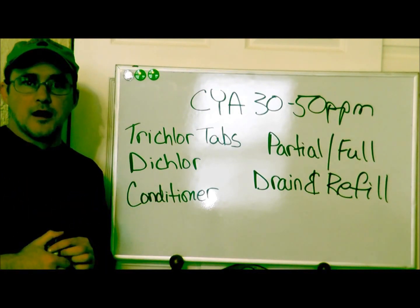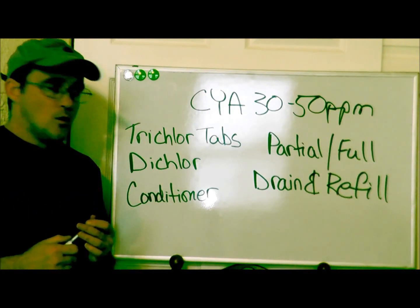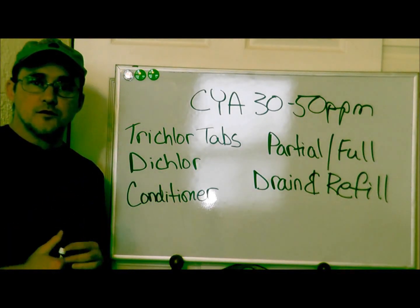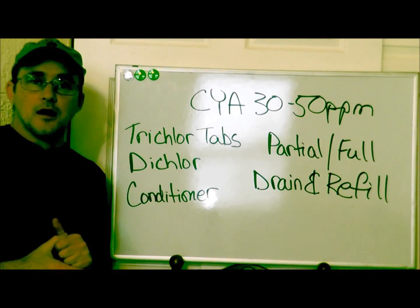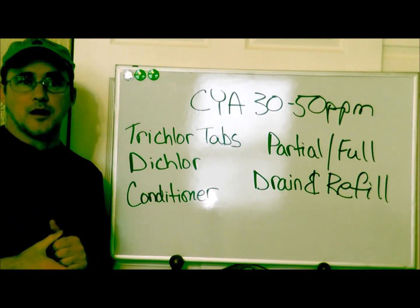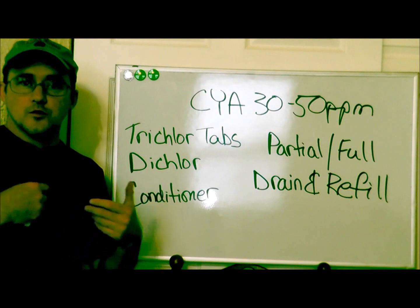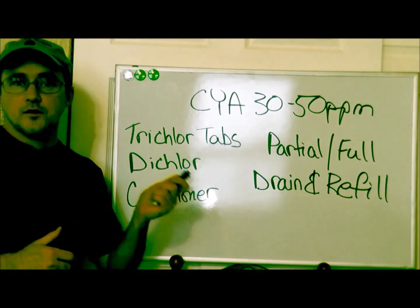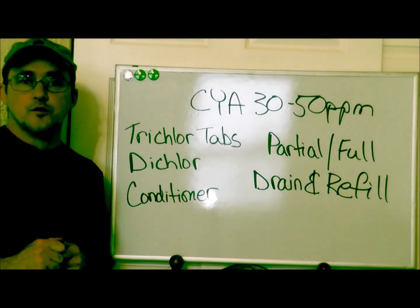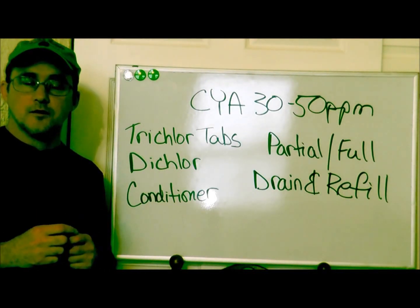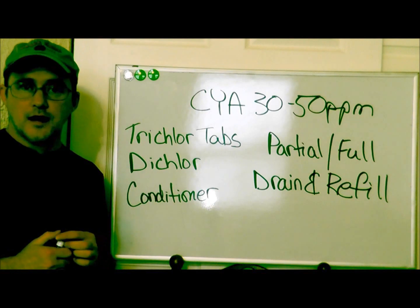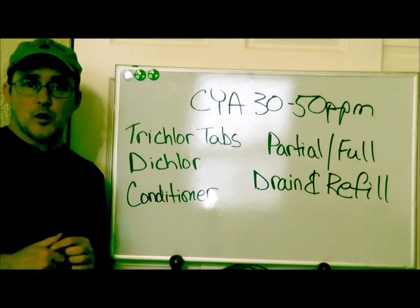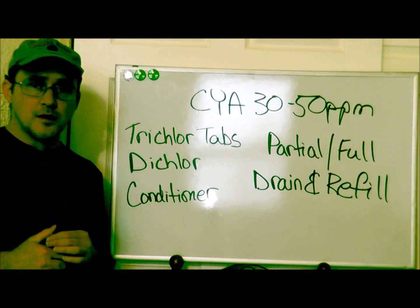Why does your pool stabilizer get out of whack? Probably one reason would be the use of trichlor tabs. The tabs both have the chlorine and the stabilizer in them. So through continuous use or overuse of trichlor tabs, it can cause your stabilizer to go through the roof very quickly. For every 10 parts per million of chlorine you add with trichlor tabs, you increase your cyanuric acid by six parts per million. So that's something to keep in mind.